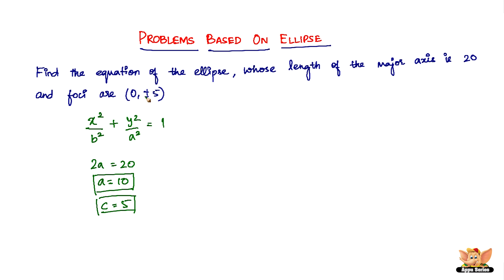So all that we have to do to find the equation is just find the value of b which can be found by using this formula: a squared equal to b squared plus c squared. So we need to find b which is b squared equals a squared minus c squared.